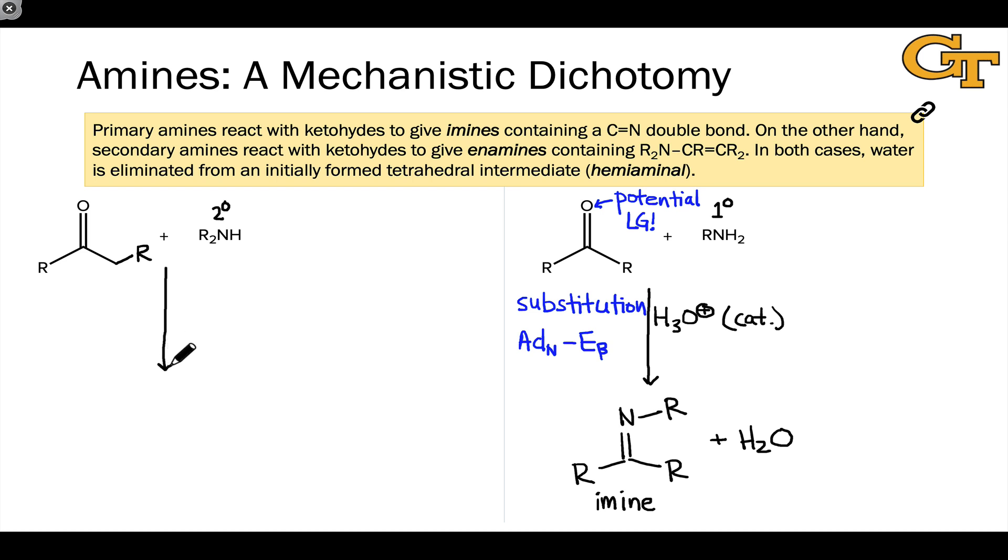When a carbonyl compound, ketone or aldehyde, is combined with a secondary amine, we again typically use acid catalyst to accelerate this reaction. The product we get is not the same as the one we get over here. In fact, a substitution process still occurs. We have a carbon nitrogen bond where we had a carbon oxygen bond in the starting material.